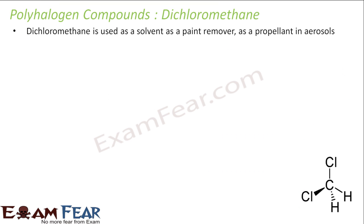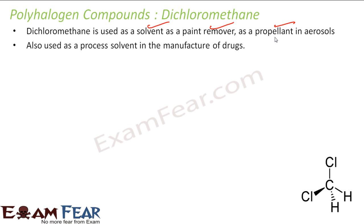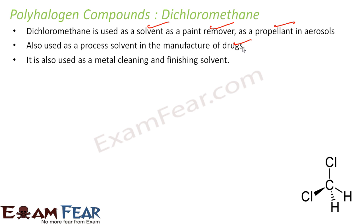Let's start with dichloromethane. It is used as a solvent, as a paint remover, and as a propellant in aerosols. It is used as a process solvent in the manufacture of drugs. It is also used as a metal cleaning and finishing solvent.